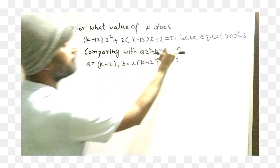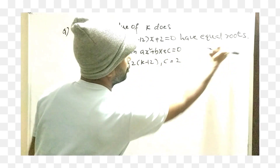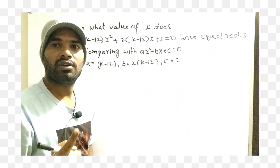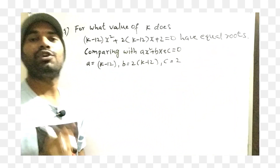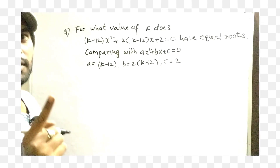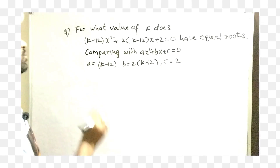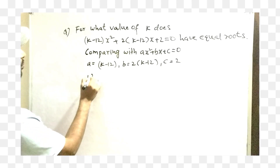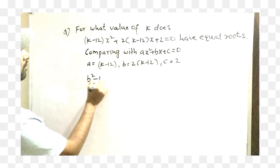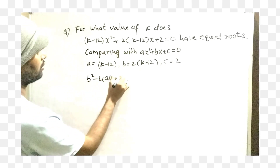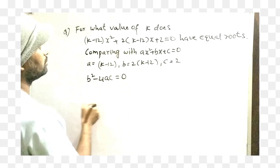When we have equal roots, the condition for equal roots is b squared minus 4ac equal to 0.